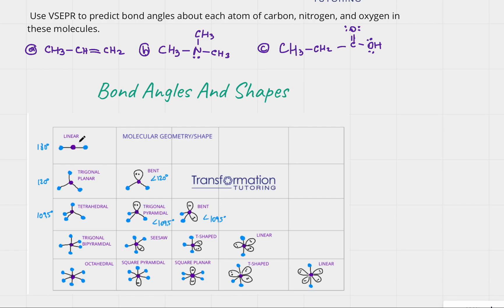If the central atom is attached to two atoms only, the molecular geometry is linear and the bond angle is 180°. If attached to three atoms with no lone pairs, the angle is 120°. If attached to four atoms with no lone pairs, the angle is 109.5°. If attached to two atoms and one lone pair, the angle is slightly less than 120°. Let's get started since we need to evaluate each carbon, nitrogen, and oxygen.